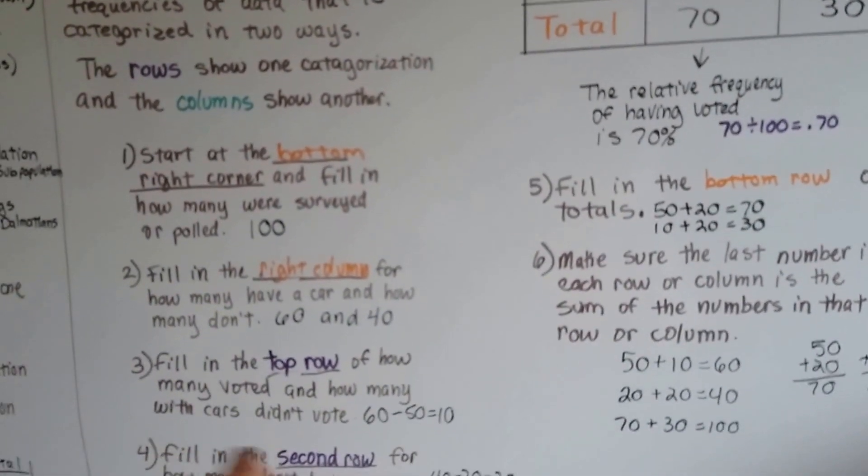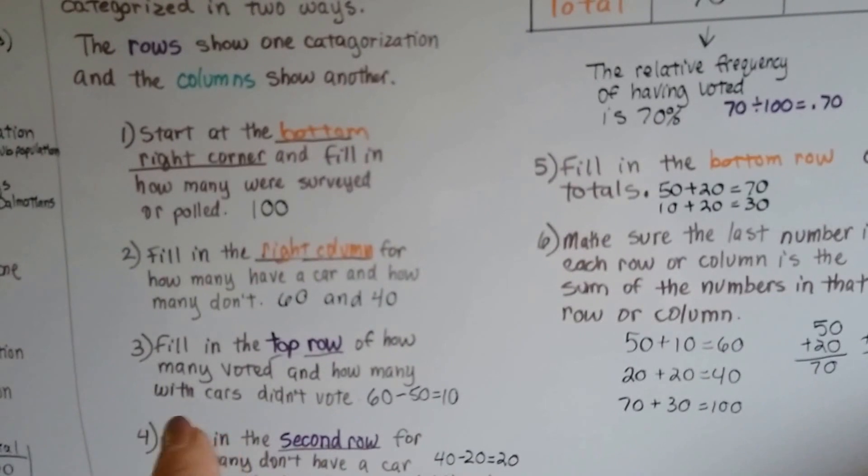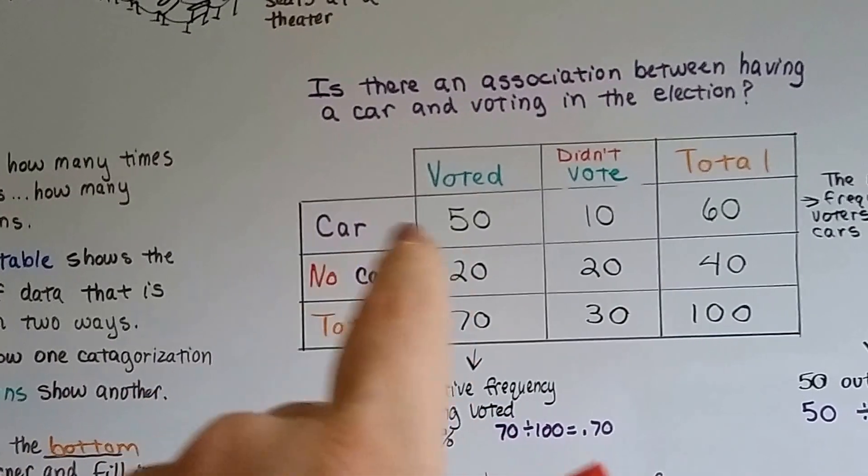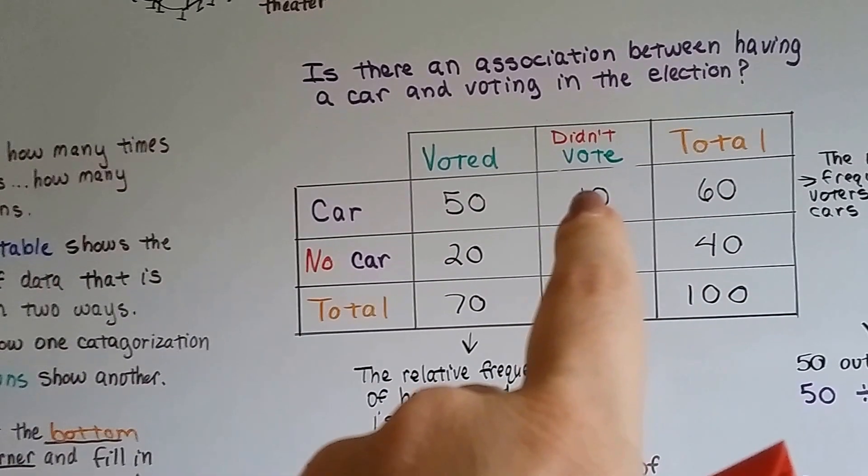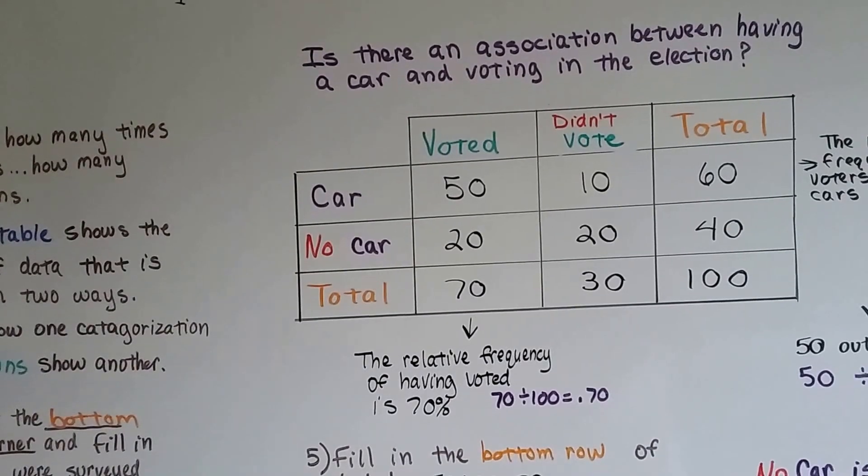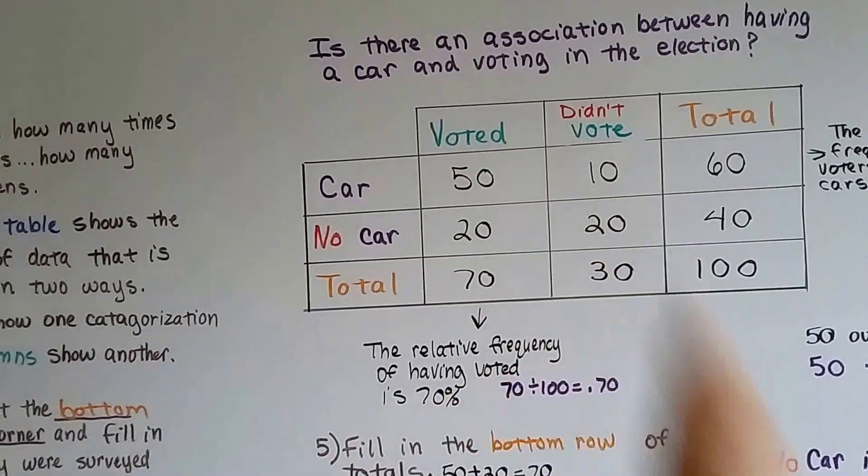The next thing we do is fill in the top row of how many voted and how many had cars. We know that the ones with cars that voted were 50. Well if the total was 60, we know that the ones that didn't vote had to be 10, because 60 take away 50 is 10.